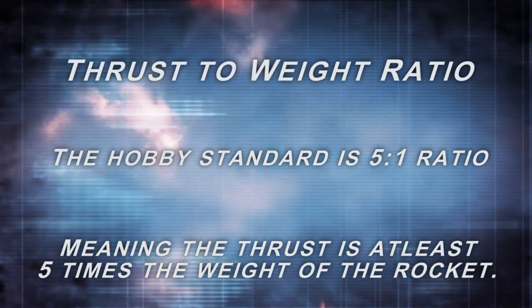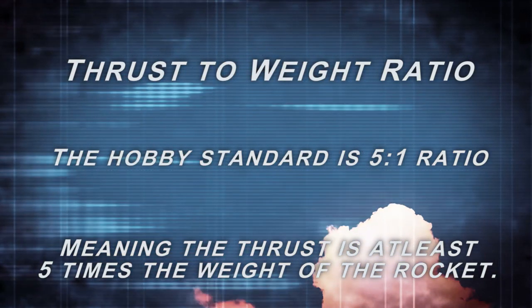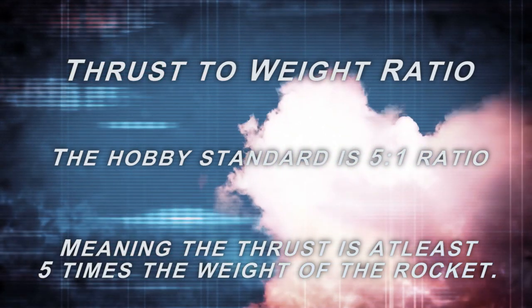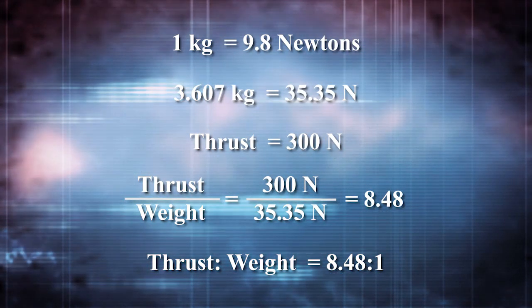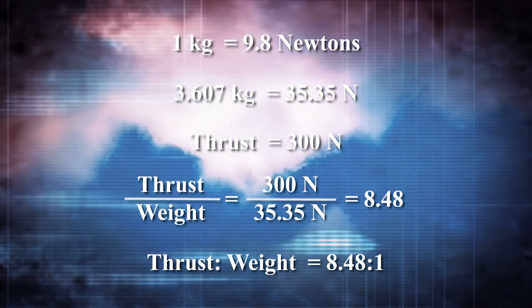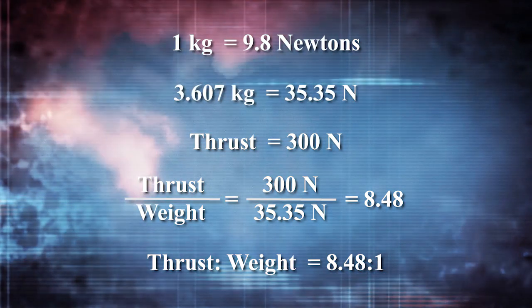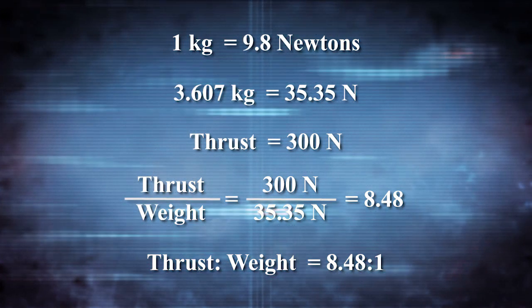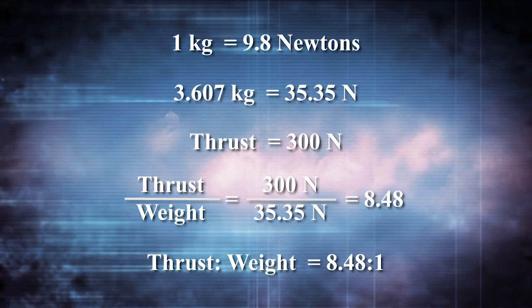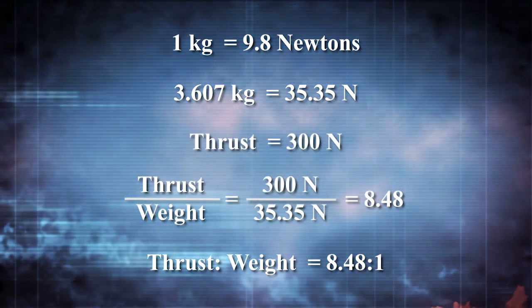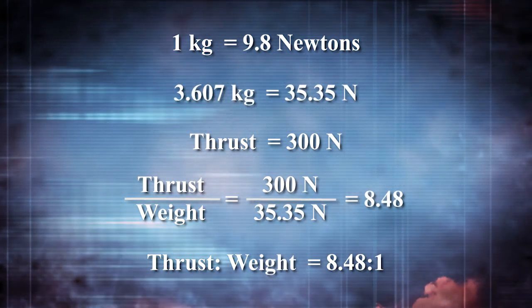The J300 motor should provide enough thrust to get our rocket to a safe velocity before it leaves the launch rail. Another concern when selecting your rocket motor is the thrust-to-weight ratio. The hobby standard is to launch only rockets with at least a 5 to 1 ratio, meaning the thrust is at least 5 times the weight of the rocket. One kilogram equals 9.8 Newtons, so 3.607 kilograms equals 35.35 Newtons. The thrust of 300 Newtons divided by the weight of 35.35 Newtons gives a value of 8.48 — a thrust-to-weight ratio of 8.48 to 1, well above the safe minimum of 5 to 1.